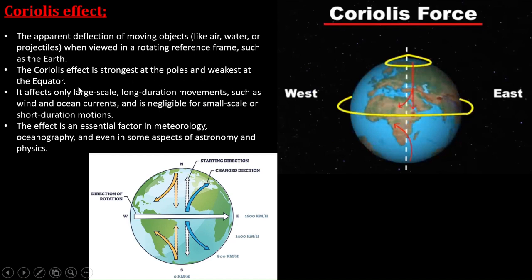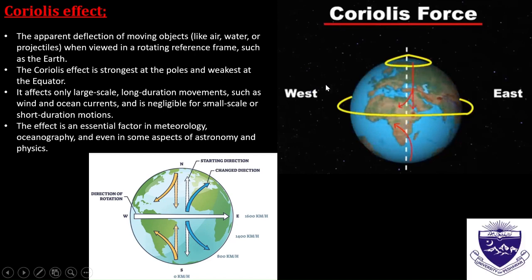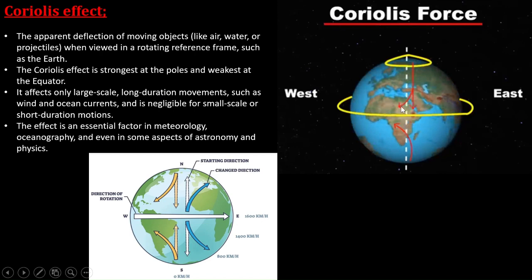The Coriolis effect is strong at the poles while weak at the equator, because at the poles the pressure concentration is very high and at the equator it is very low. By natural law, air moves from higher pressure to lower pressure. The effect applies to long-duration movements such as wind and ocean currents, and is negligible for small-scale or short-duration motion. The effect is mostly associated with meteorology, oceanography, and some aspects of astronomy.